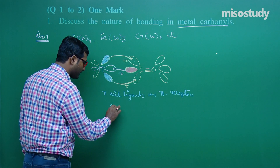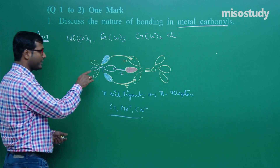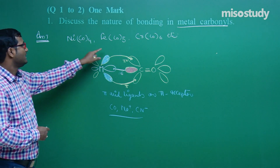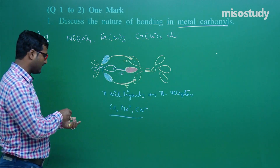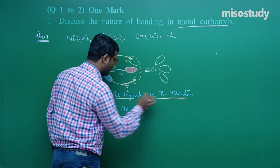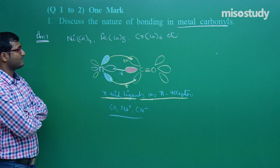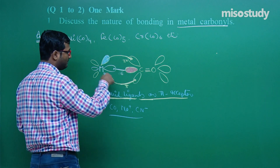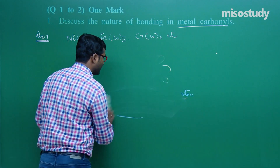Due to this reason there is involvement of π. So they are also called π acid ligands or π acceptor ligands. Examples of π acceptors: CO, NO+, CN−. Back donation is also possible. This is the nature of bonding in metal carbonyls — you can observe this in Ni(CO)4, Fe(CO)5, Cr(CO)6.